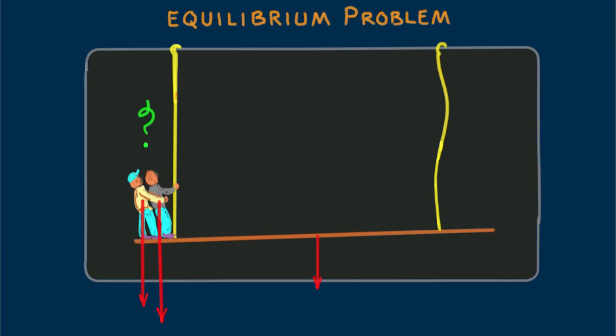In the previous screencast I left you with a concluding question. I asked what the tension would be in a single supporting rope holding up the weights of Burl, me, and the scaffold.